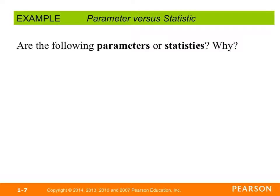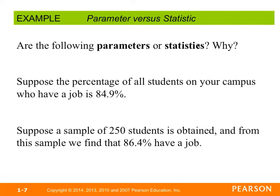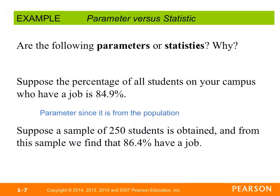Let's go through a couple of examples to identify whether these are parameters or statistics. Suppose the percentage of all students on your campus who have a job is 84.9%. That's a parameter since it's from the population — all students were surveyed. Now suppose a sample of 250 students is obtained and from this sample we find that 86.4% have a job. This specifically says we took a sample, so that's going to be a statistic.